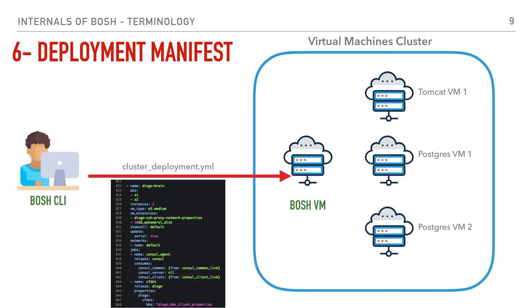Our sixth term will be a deployment manifest. When we give BOSH a compressed tarball of a software — that is, a BOSH release of our software, for example a BOSH release of RabbitMQ or Postgres — we also need to give it certain configurations that tell BOSH what to do with that software. This configuration is provided as a YAML file to the BOSH director through the CLI. For example, it will contain how many VMs you want to deploy, what to put on those VMs, the size of the VMs you need, whether you need a disk attached to that VM, and many other configurations which we will go into in deep detail later on. So that will be the deployment manifest.